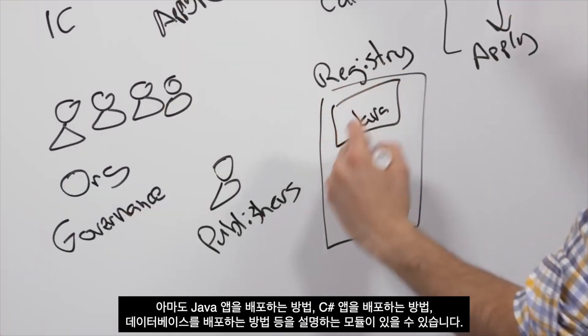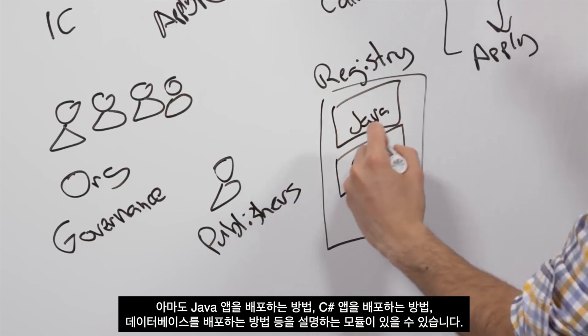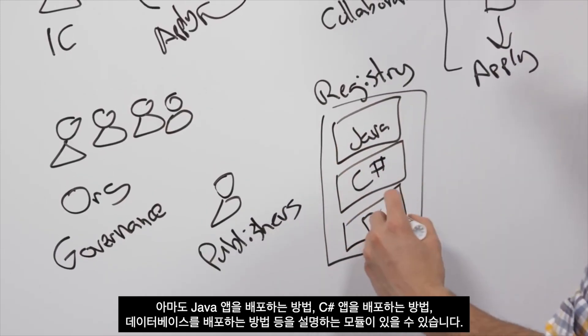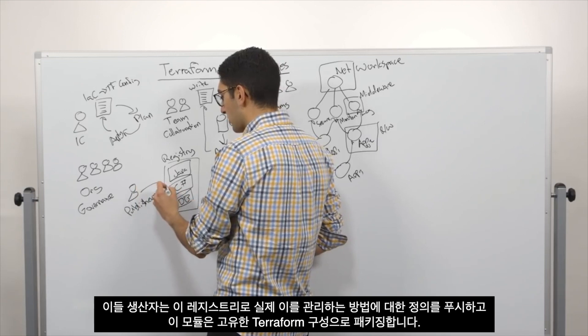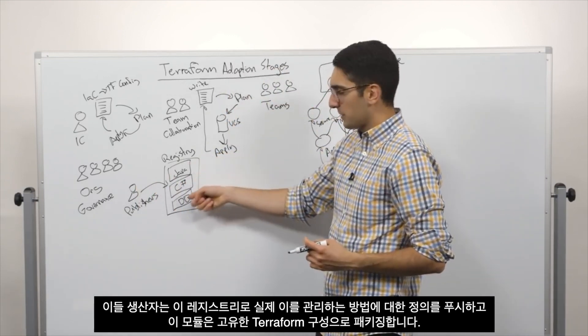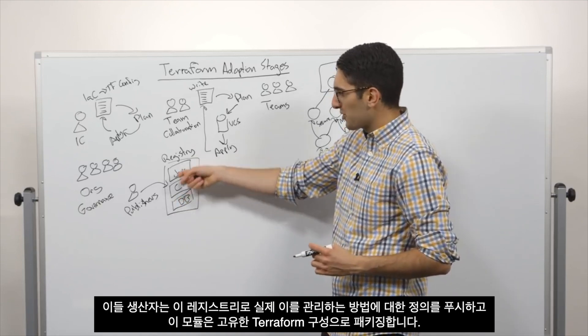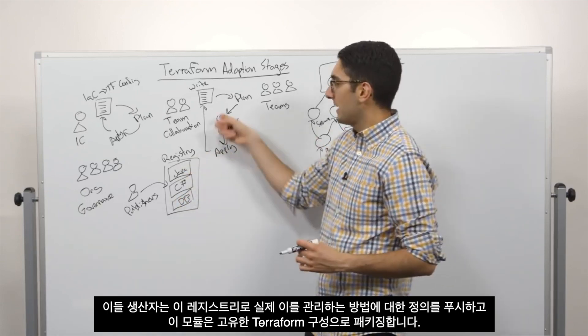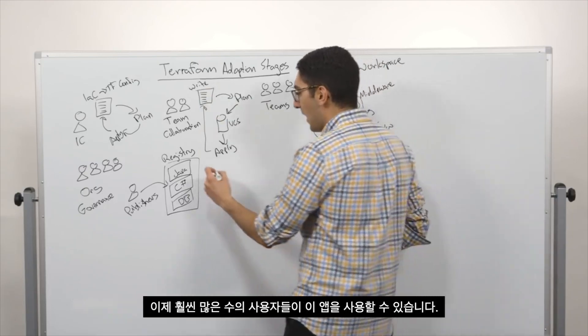So we might have a module that says, here's how we deploy a Java app, here's how we deploy a C-sharp app, here's how we deploy a database. So these publishers are pushing into this registry a definition of how do we actually deploy and manage this stuff, where this module is really packaging up an opinionated set of Terraform configuration.